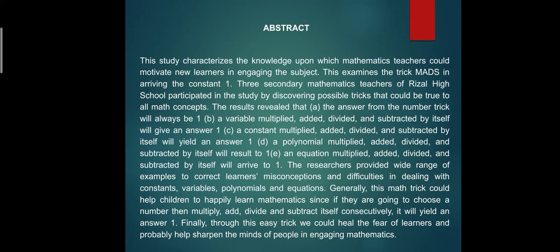The researchers provided wide range of examples to correct learners' misconceptions and difficulties in dealing with constants, variables, polynomials, and equations. Generally, this math trick could help children to happily learn mathematics since if they're going to choose a number, then multiply, add, divide, and subtract itself consecutively, it will yield an answer one.